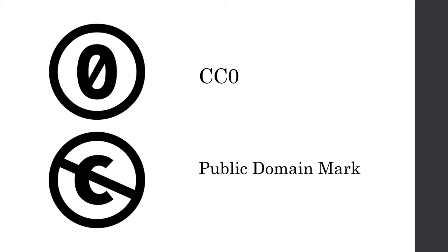But let's say that you don't want to pick a favorite layer of the onion, and all of these are too restrictive for what you want to see happen to your work. Perhaps you want to grant it to the public domain. While certain countries' copyright laws do not necessarily allow you to forego the copyright that is inherent to your work from the moment of creation, Creative Commons has created a way for you to designate that you wish for your work to be treated as public domain. CC0 allows creators to dedicate their work to the public domain and indicate that they wish for it to be treated as such.